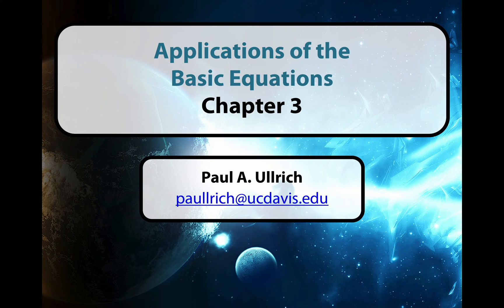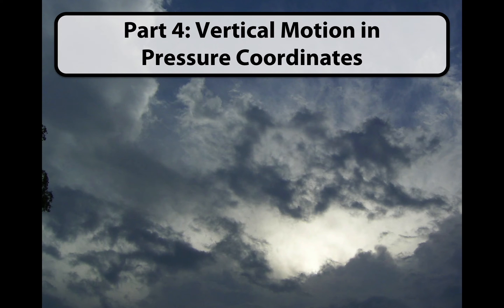Hello all, welcome back to Introduction to Atmospheric Dynamics, Chapter 3: Applications of the Basic Equations. In this section we'll be talking about vertical motion, and in particular vertical motion in pressure coordinates. At the start of this section, we'll discuss how we can relate the vertical pressure velocity to the vertical velocity in height coordinates, and then talk about two different ways we can use in order to actually diagnose the vertical velocity in the pressure coordinate system.